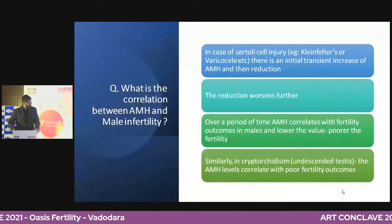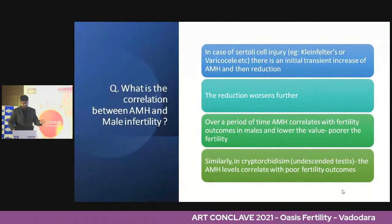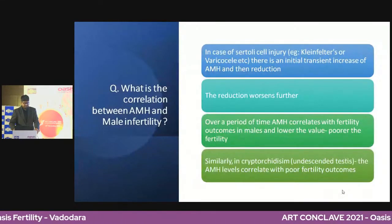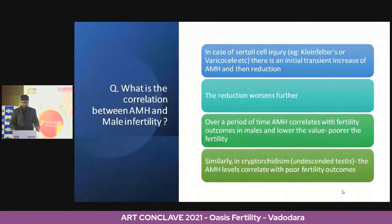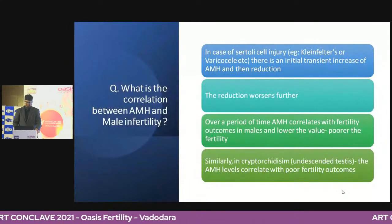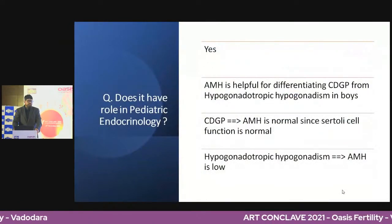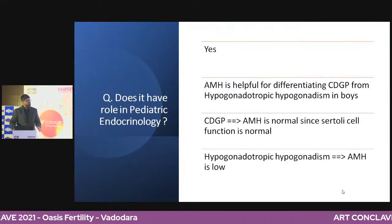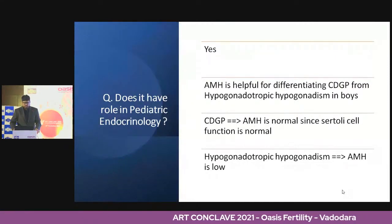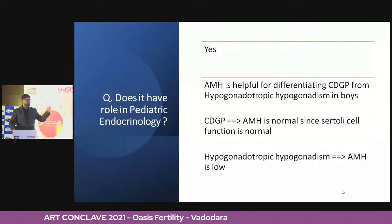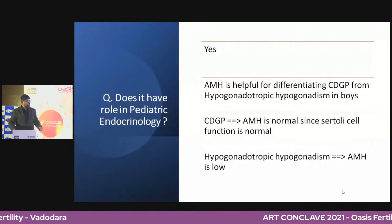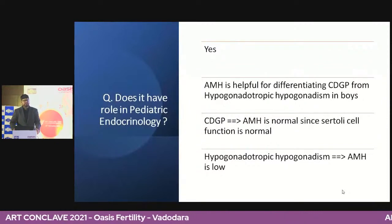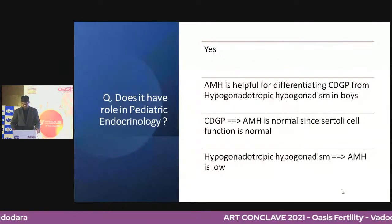In cryptorchidism — undescended testis — AMH levels are useful for prognosis and management of these young boys. AMH does correlate with poor fertility outcome in these cases. In pediatric endocrinology, one of the biggest challenges is differentiating CDGP — constitutional delay of growth and puberty — from hypogonadotropic hypogonadism in boys. In CDGP, AMH is absolutely normal since Sertoli cell function is normal. In hypogonadotropic hypogonadism — Kallmann syndrome and its variants — the AMH level is low. AMH is a very useful test in young boys for this differentiation.